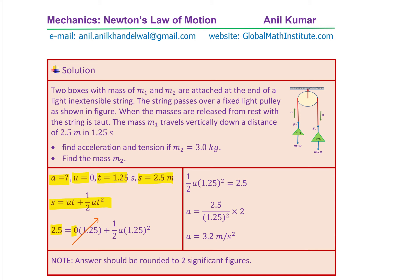It is important to note that in this case we are working on two significant figures, and therefore the answer should also be rounded to two significant figures. We have now found the acceleration of the whole system. Since the string is an inextensible light string, the acceleration is the same on both sides — of course the direction is different — and the tension is also the same.